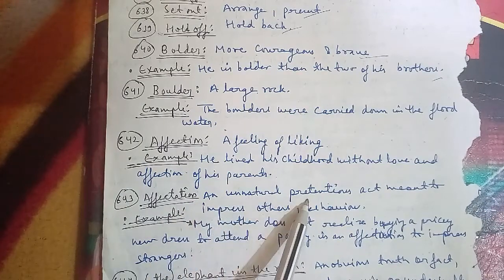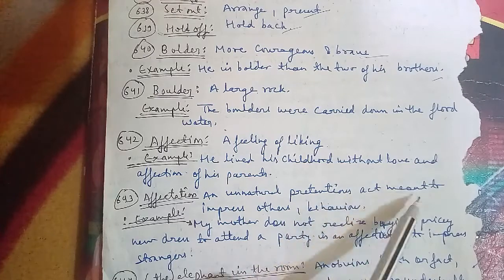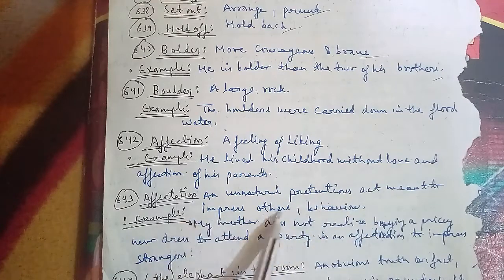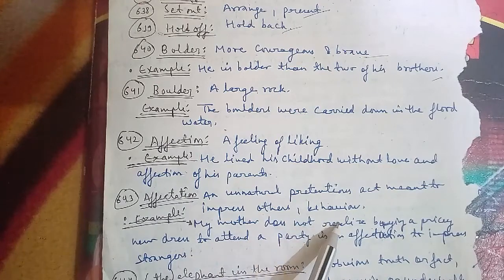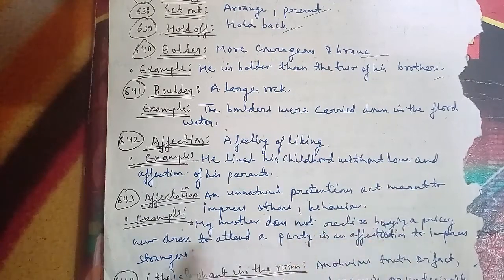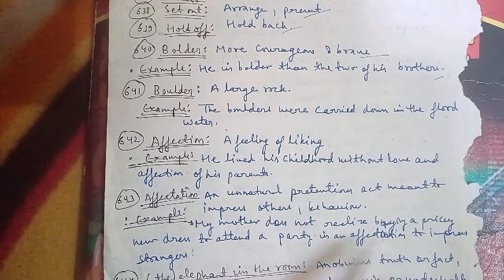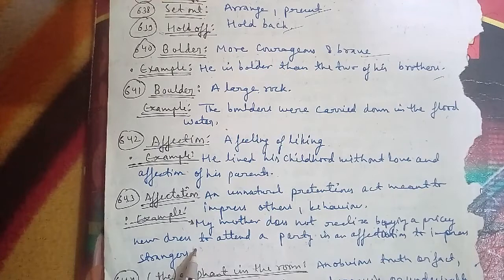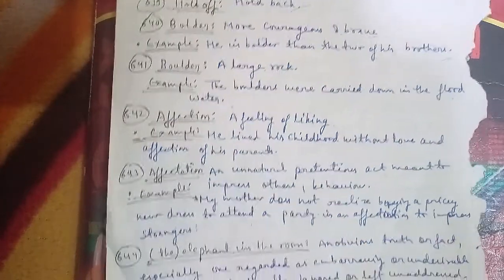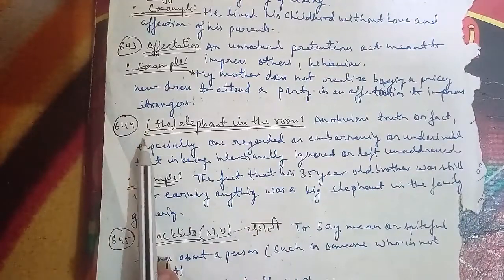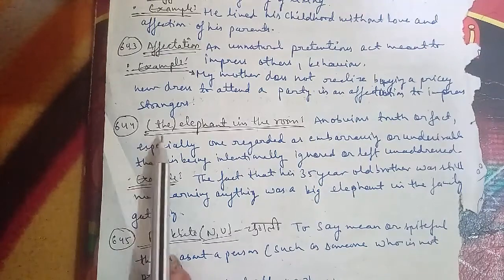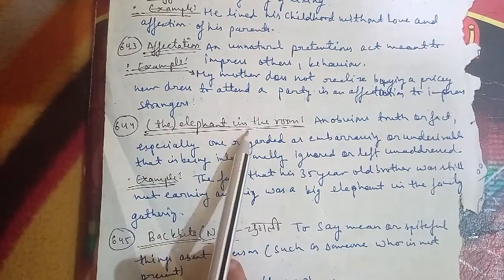The 644th word is the phrase 'elephant in the room'. It means an obvious truth or fact — especially one regarded as embarrassing or undesirable — that is being intentionally ignored or left unaddressed. Example: The fact that his 35-year-old brother was still not earning anything was a big elephant in the family gathering.